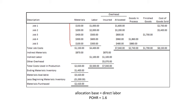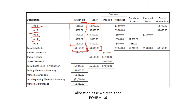This is our direct material costs per job. For Job 1 we spent $150, for Job 2 we spent $200, and so forth. The total direct material spent on all jobs is $1,150. Next, this is our direct labor costs — for Job 3 we spent $500, for Job 4 we spent $600 on direct labor. The total direct labor used for all jobs is $4,400.